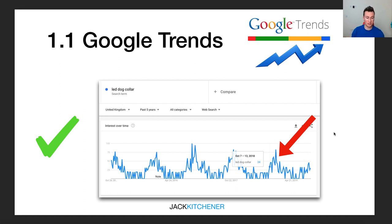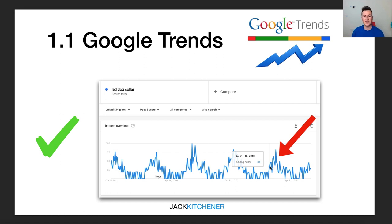Moving on to a good example — this is the LED dog collar, the stereotypical dropshipping item. I'm not necessarily saying you should go out and sell this item, but what I'm illustrating is that you want to sell a product that's currently on an upward trend, because there are more and more people coming into the market and showing interest, and therefore more people buying it. As I record this video on the 22nd of October, you can see it's at the bottom of the peak and is going to start rising — so now would be a good time.